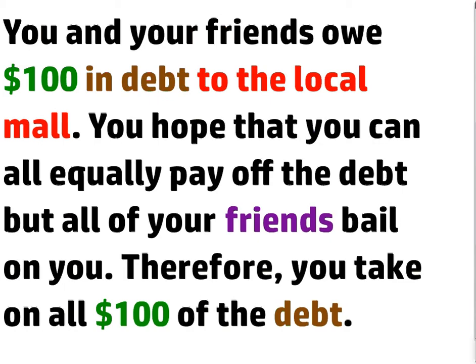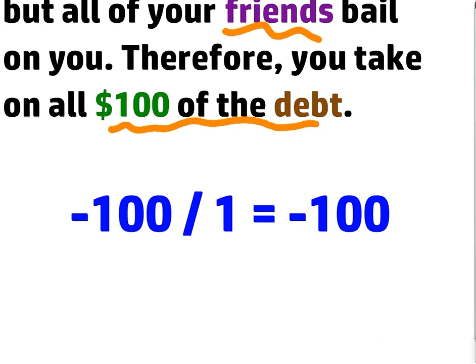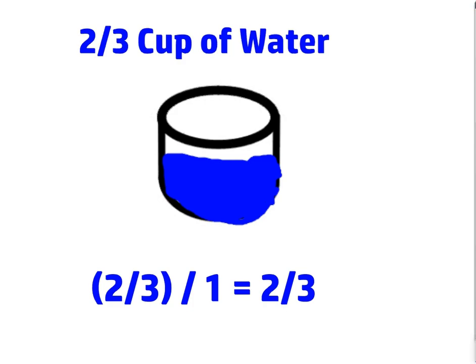Let's think of it another way. You and your friends owe $100 in debt to the local mall. You hope that you can all equally pay off the debt, of course. But all of your friends bail on you. Therefore, you take on all $100 of the debt. So how much would you owe? Well, $100 in debt is actually a negative number. We've talked about that before. And if you just take it on yourself, just like the pizzas, you ate them all. In this case, you're paying all the debt. Then guess what? You have to pay all $100. So therefore, you're $100 in debt.